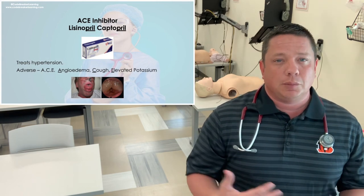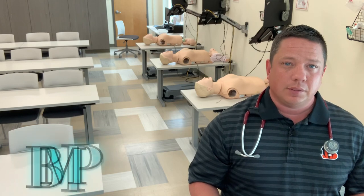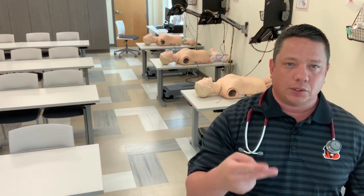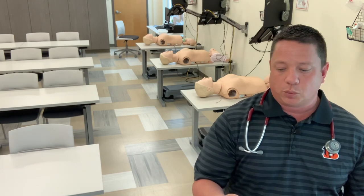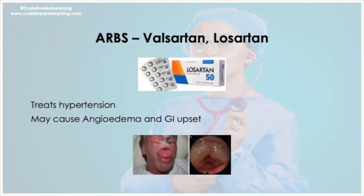Elevated potassium — you should know your ranges, as this can cause hyperkalemia. You should order a BMP; the range for potassium is 3.5 to 5. As a little snippet, your potassium range is also the same as your albumin range — 3.5 to 5. If your patient develops a cough, the physician might switch them over to an ARB, which is our next medication.